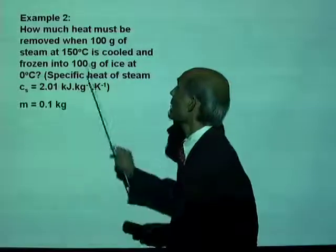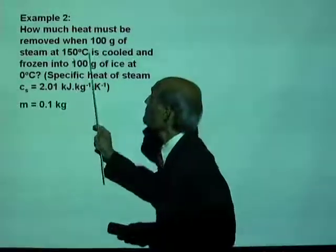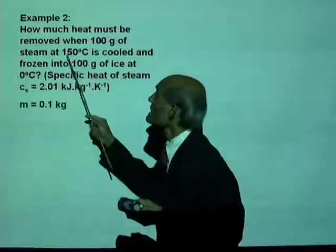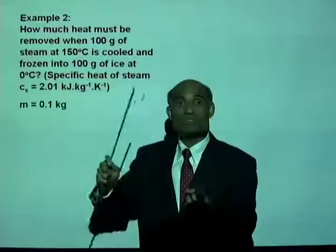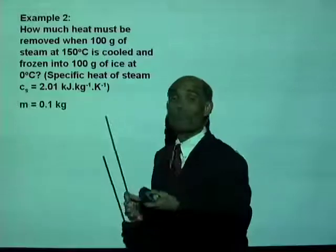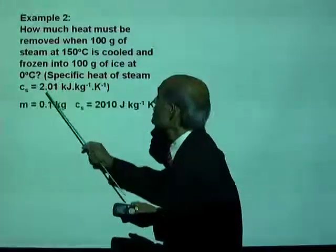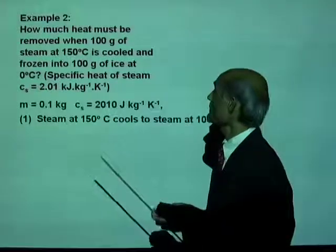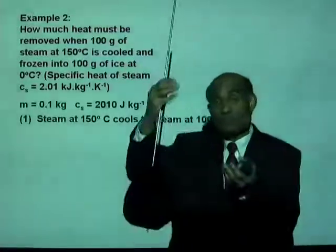Mass is 0.1 kilogram — that is 100 grams of steam. We start with 100 grams of steam at 150 degrees Celsius. When you remove heat, this steam at 150 degrees Celsius will first cool down to 100 degrees Celsius, and then there is a change of state. The specific heat of steam is 2.01 kilojoules per kilogram per Kelvin.